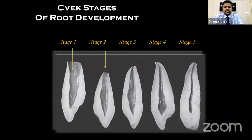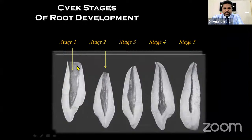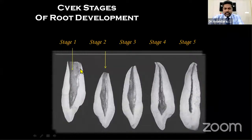We can define different stages of root formation: Stage 1 — root formation less than half; Stage 2 — more than half; Stage 3 — two-thirds of root formed; Stage 4 — almost root completed; Stage 5 — root is completed. Today's session covers management of stages one through four, explaining all available treatment options and modalities for these types of apical areas.